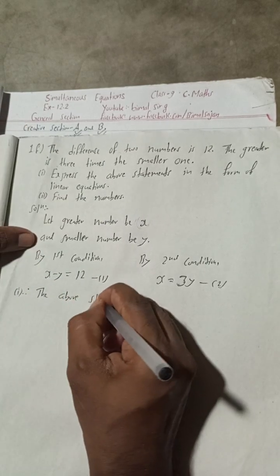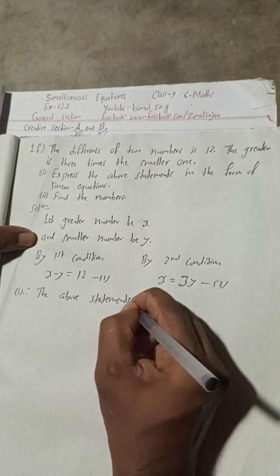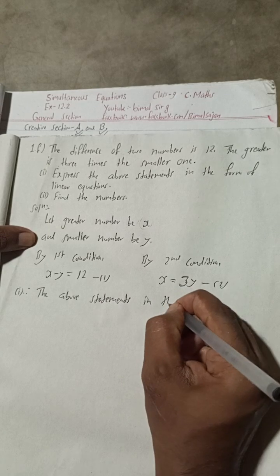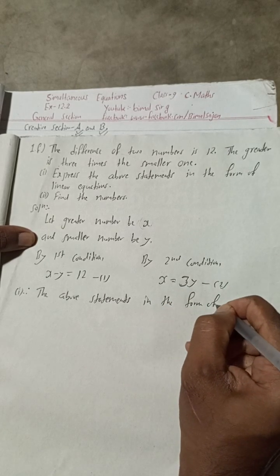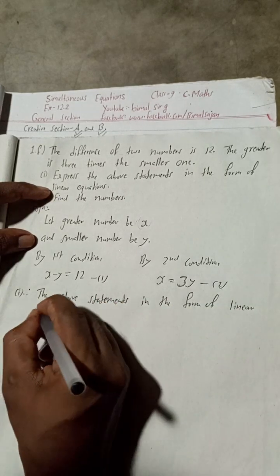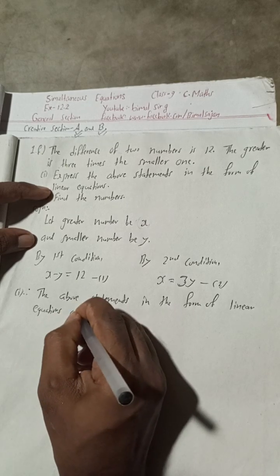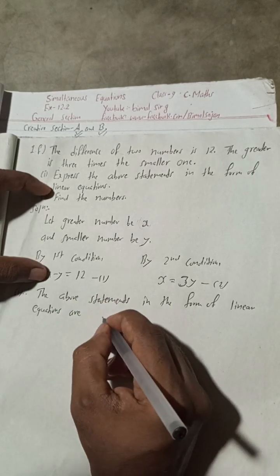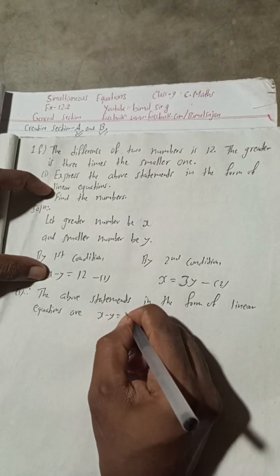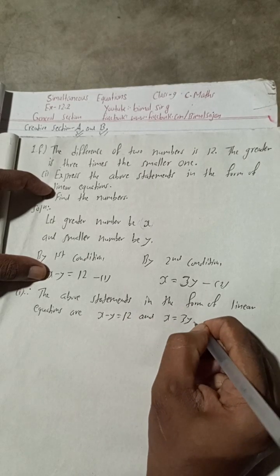The above statements in the form of linear equations are: x minus y is equal to 12, and x is equal to 3y. This is the required form.